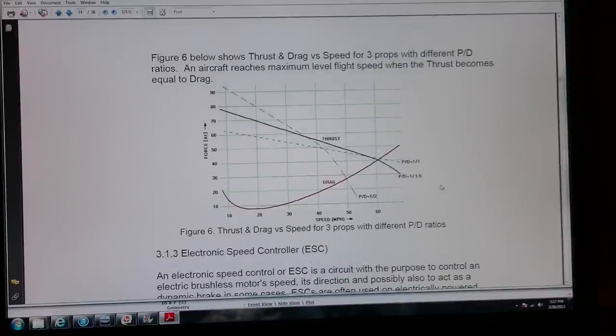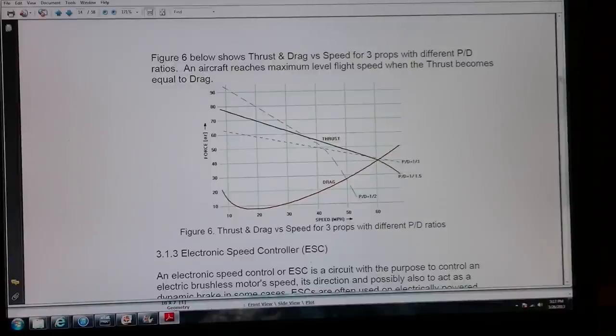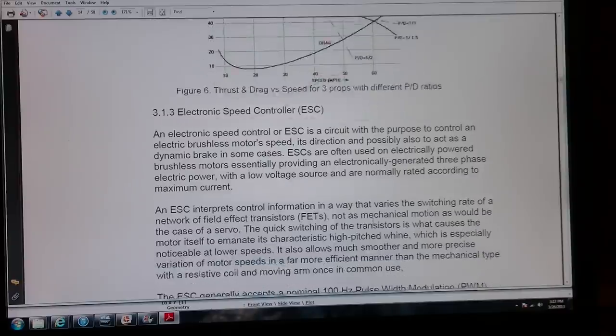Here's some published graphs that show the relationship between thrust and drag. Obviously where your drag and your thrust meet, that's basically where your top speed is going to be. You can see as close as you can get to a 1 to 1 ratio, that gives you the highest top speed.